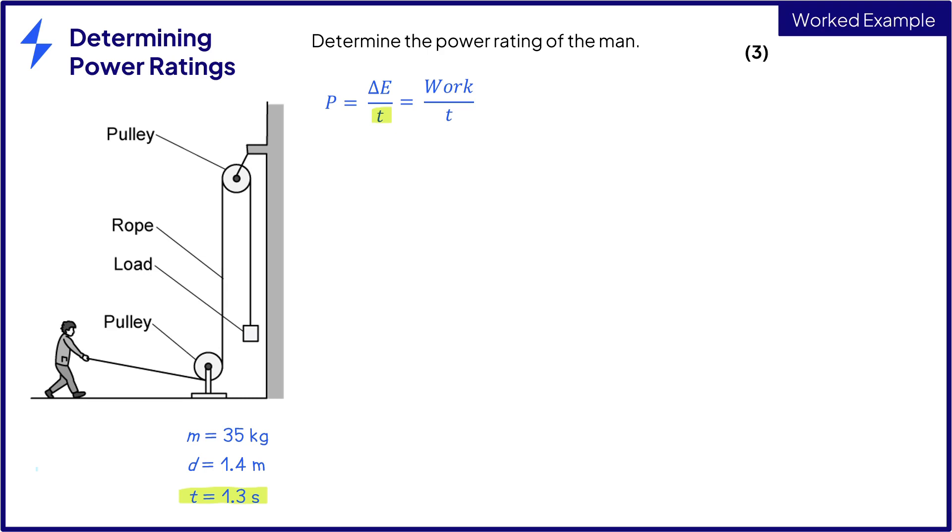Well we know that mechanical work done is force times distance and we're given the distance so we're almost there. The force in this scenario is going to be the weight of the load and we know that weight is equal to mass times the gravitational field strength.